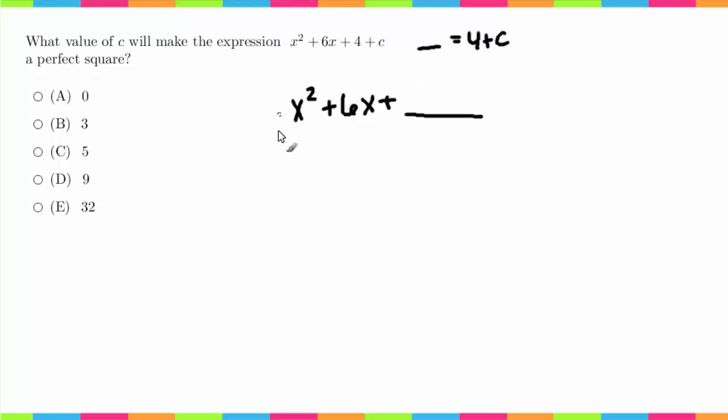So what is a perfect square? A perfect square is something like (x + 1)² or (x + 3)² or (x + 9)². Anytime you factor a polynomial and you end up with two terms that are the same, or a repeated term, that's a perfect square.